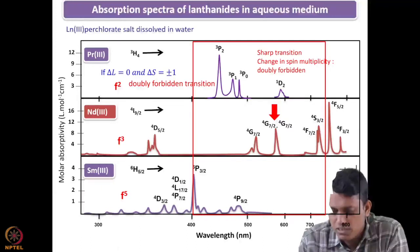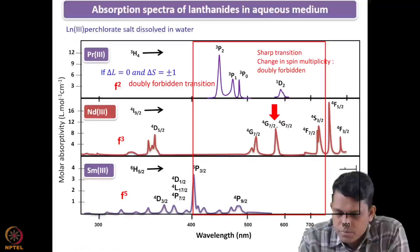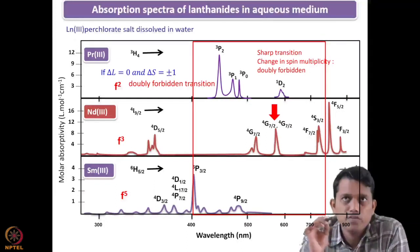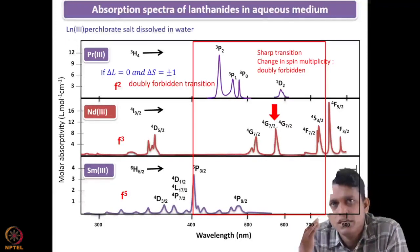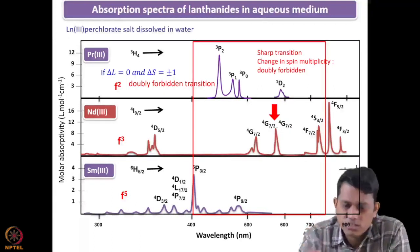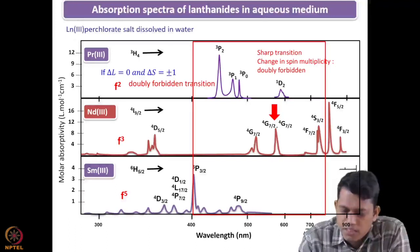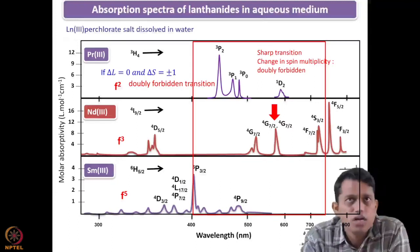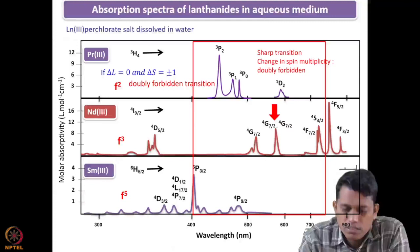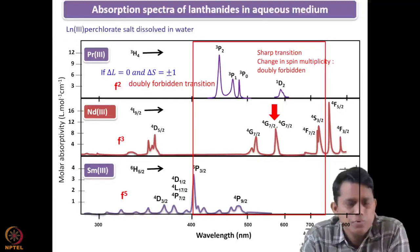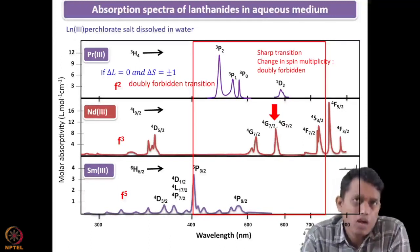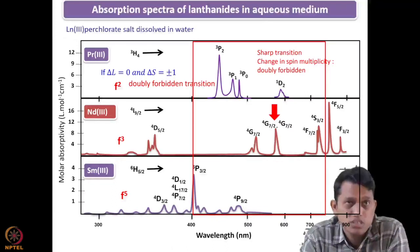To repeat for clarity: spin multiplicity should be the same in a transition. If spin multiplicity changes, the intensity falls drastically because it is a forbidden transition — ideally Δs should be zero for an allowed transition. For example, if spin multiplicity is 3 in the ground state and 1 in the excited state, there is a change and this transition is not allowed. Consequently the intensity is very weak. Transitions with the same spin multiplicity are comparatively more allowed and have better intensity.